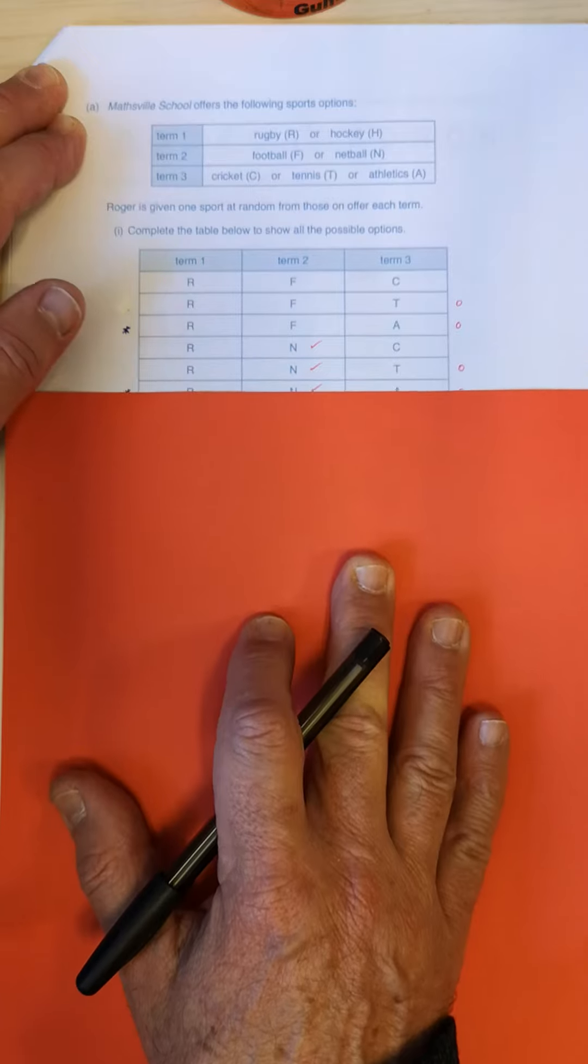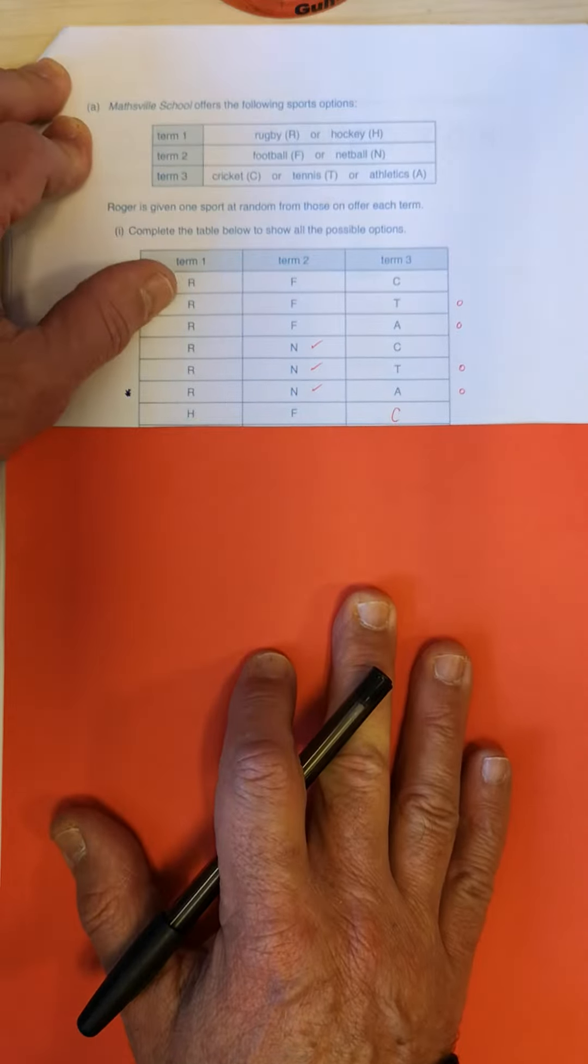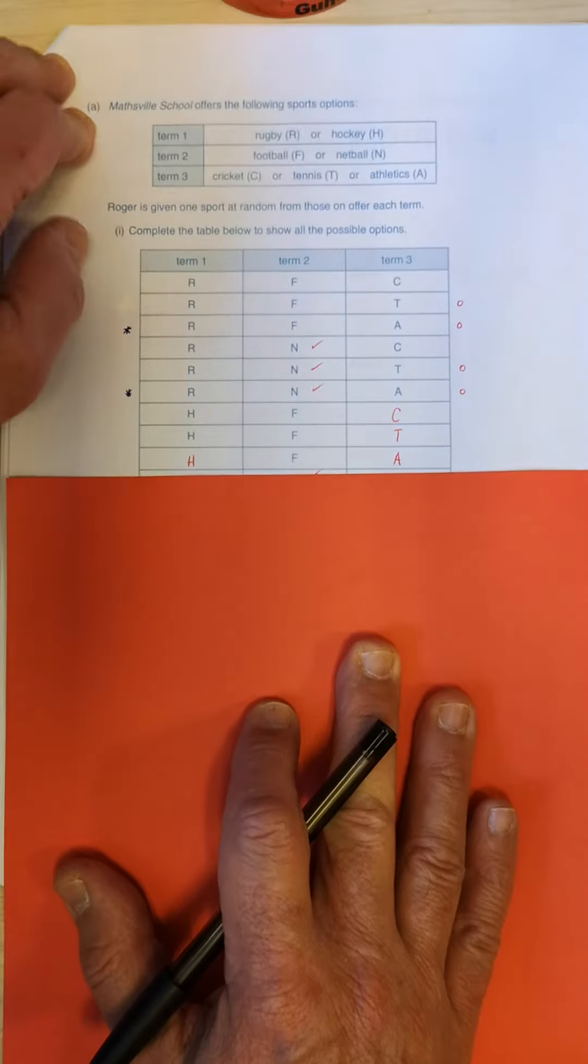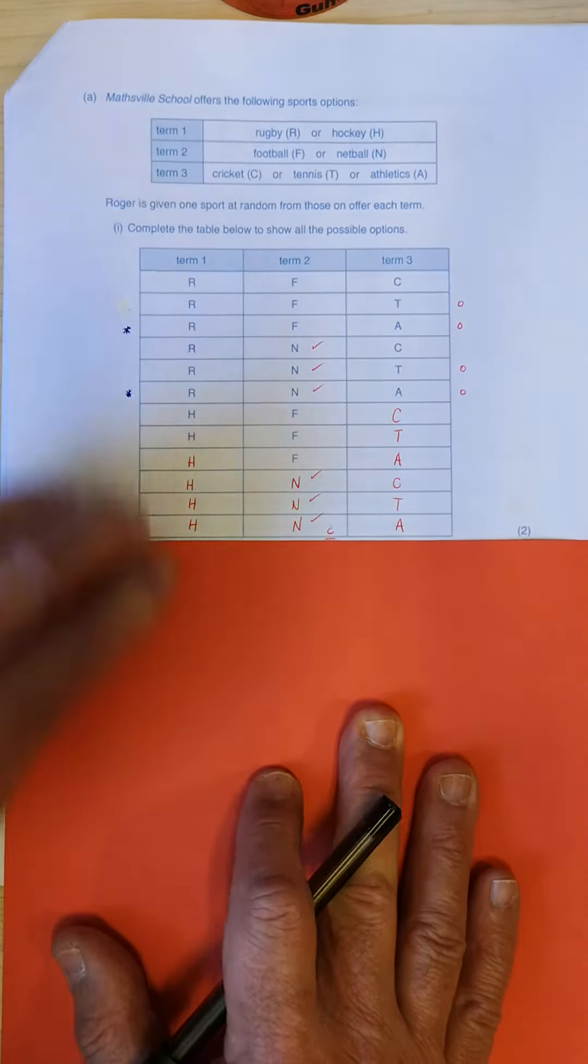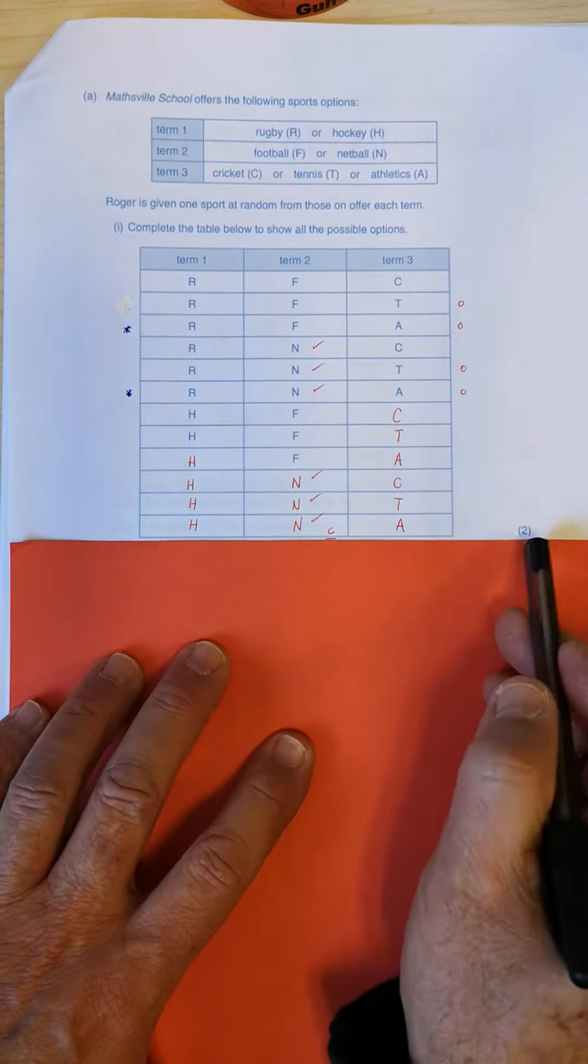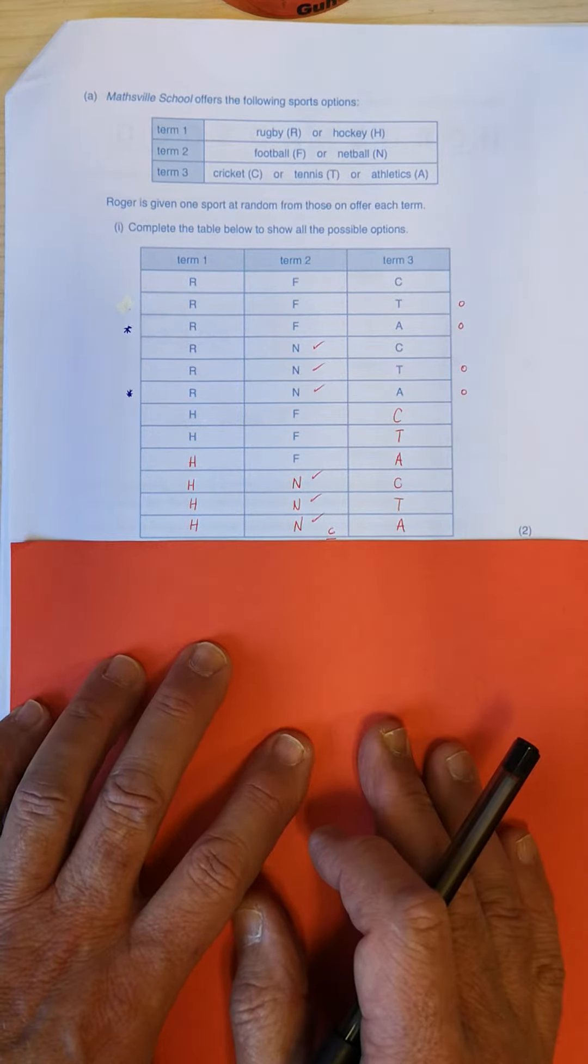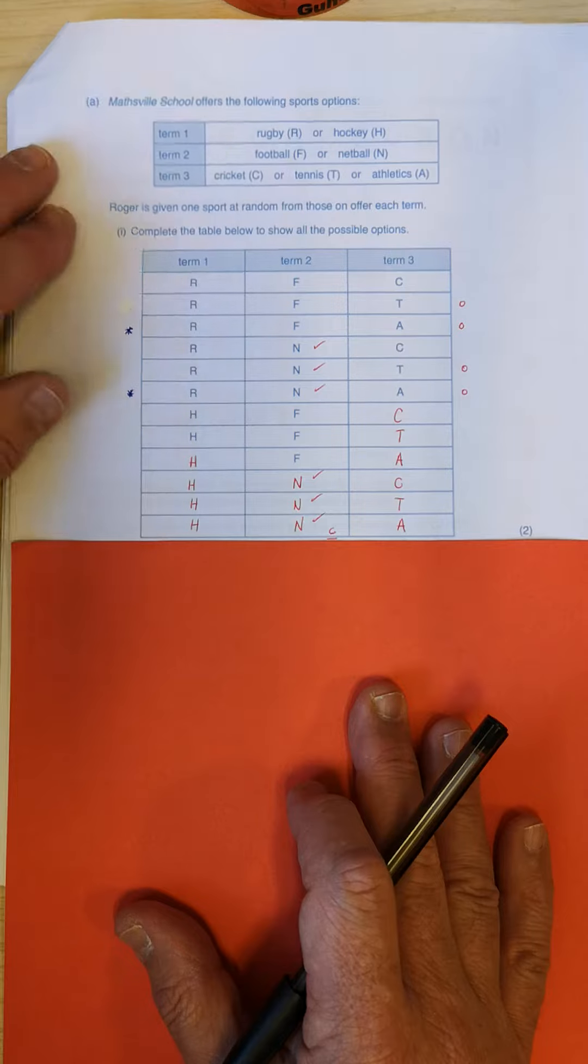Okay, so when you get down to all the R's have been taken up, which is rugby, you go on to all the H's. Right, and then fill in the table. And there's your two marks. Okay, try and get your combinations right here.